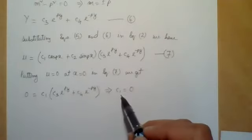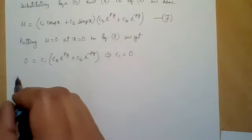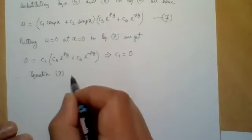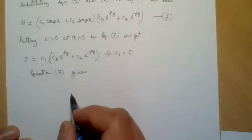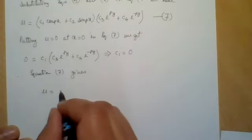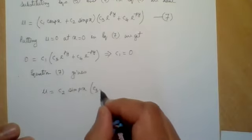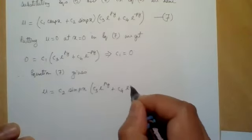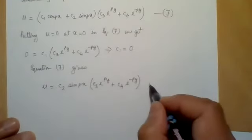Substituting c₁ = 0 in equation 7, equation 7 gives: u = c₂sin(px) · (c₃e^(py) + c₄e^(-py)). Let us call this equation number 8. We have now used the first boundary condition.